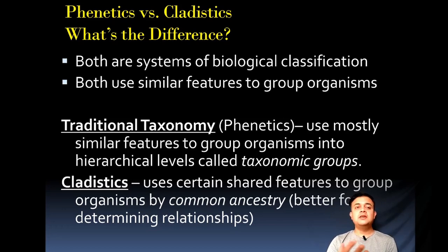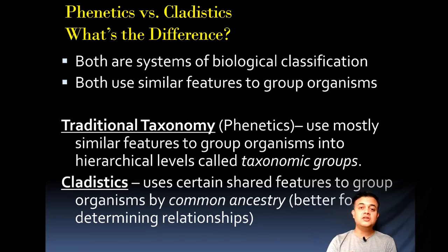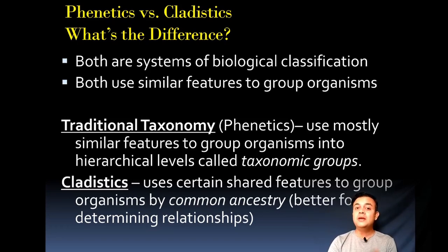Cladistics uses shared features or shared derived characters to group organisms by common ancestry, making it much better for determining deeply conserved relationships between taxonomic groups. The traditional phonetic system works only by looking at gross morphological character states — similar features — without regard for evolutionary legacy. That is the phenetic method, which is faster and more convenient but might not be accurate.